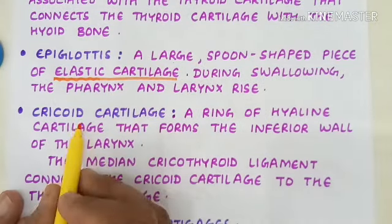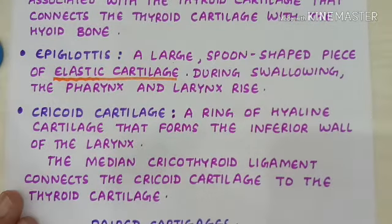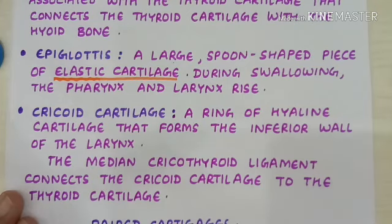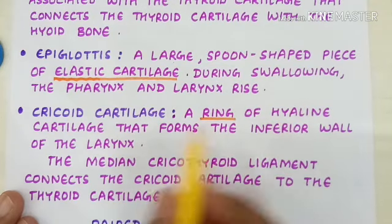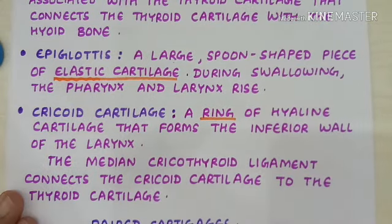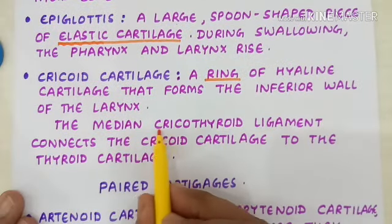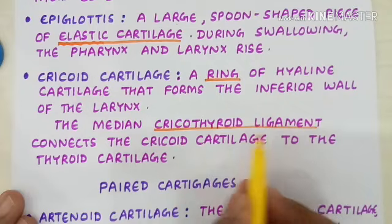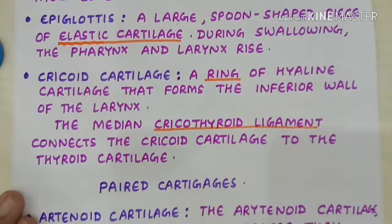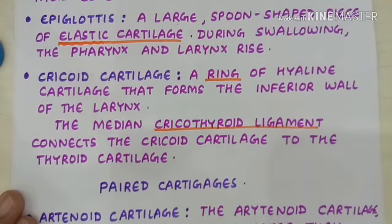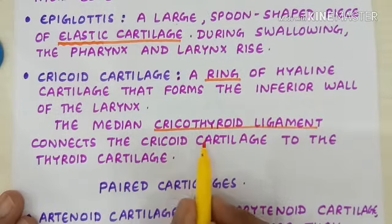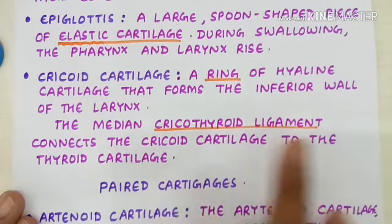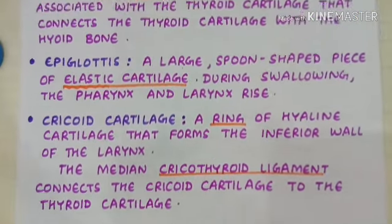The cricoid cartilage is a ring-shaped cartilage present beneath the thyroid cartilage. It is made up of hyaline cartilage and forms the inferior wall of the larynx. The cricothyroid ligament connects the cricoid cartilage to the thyroid cartilage.